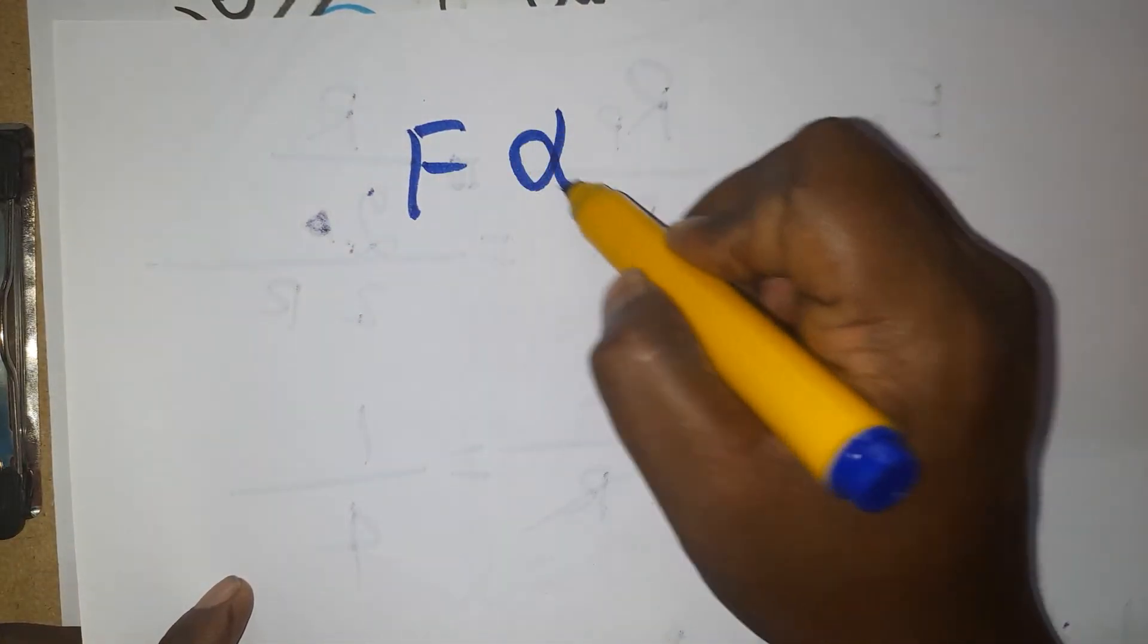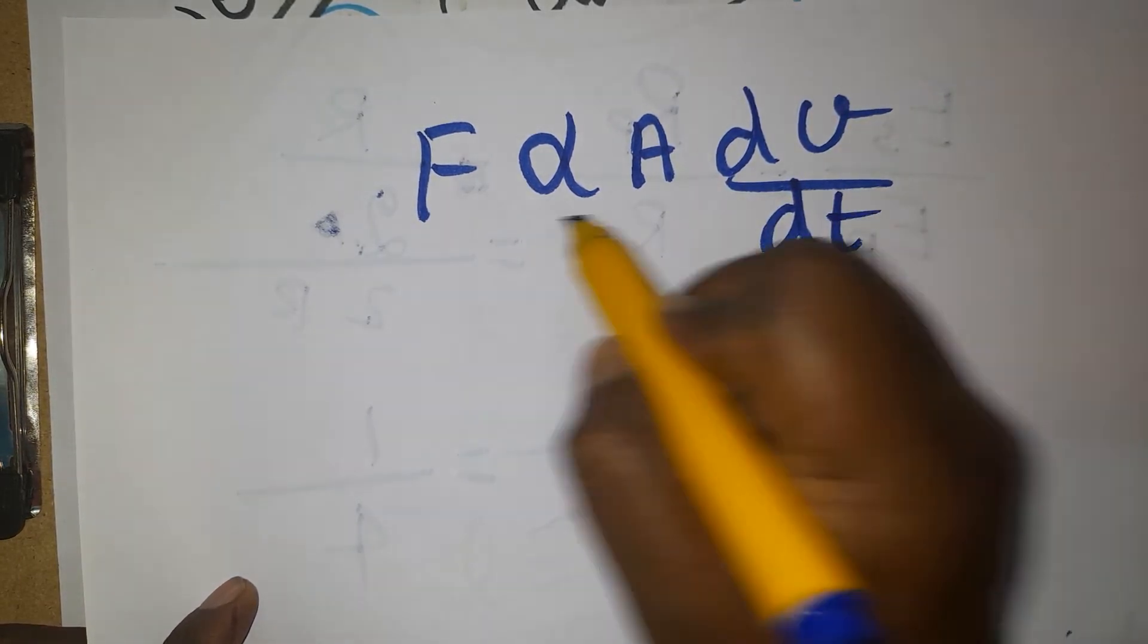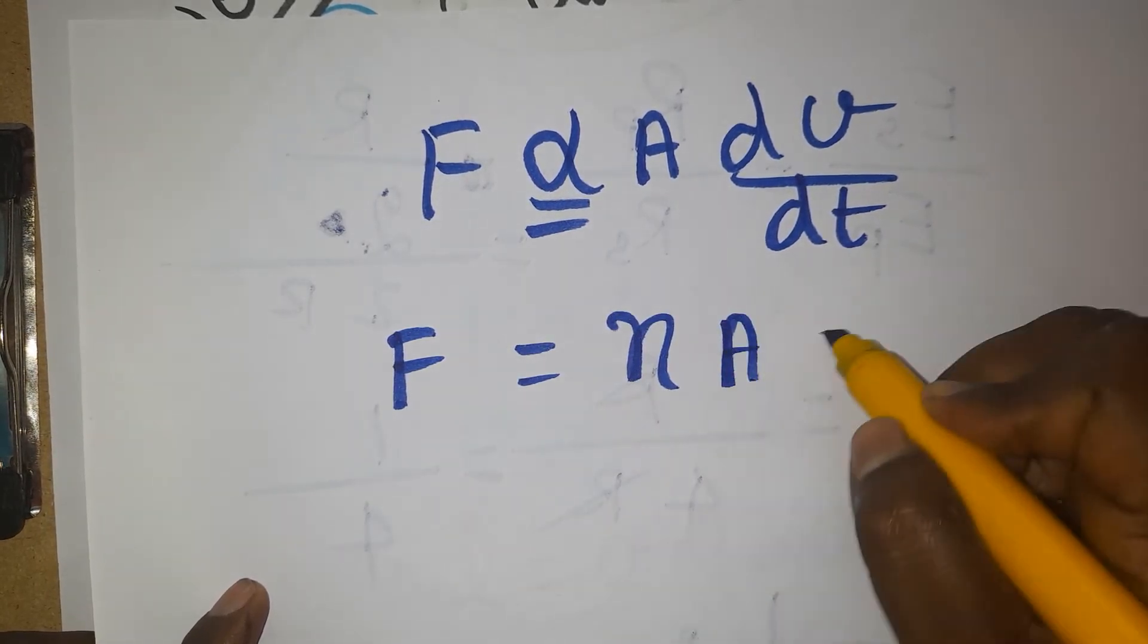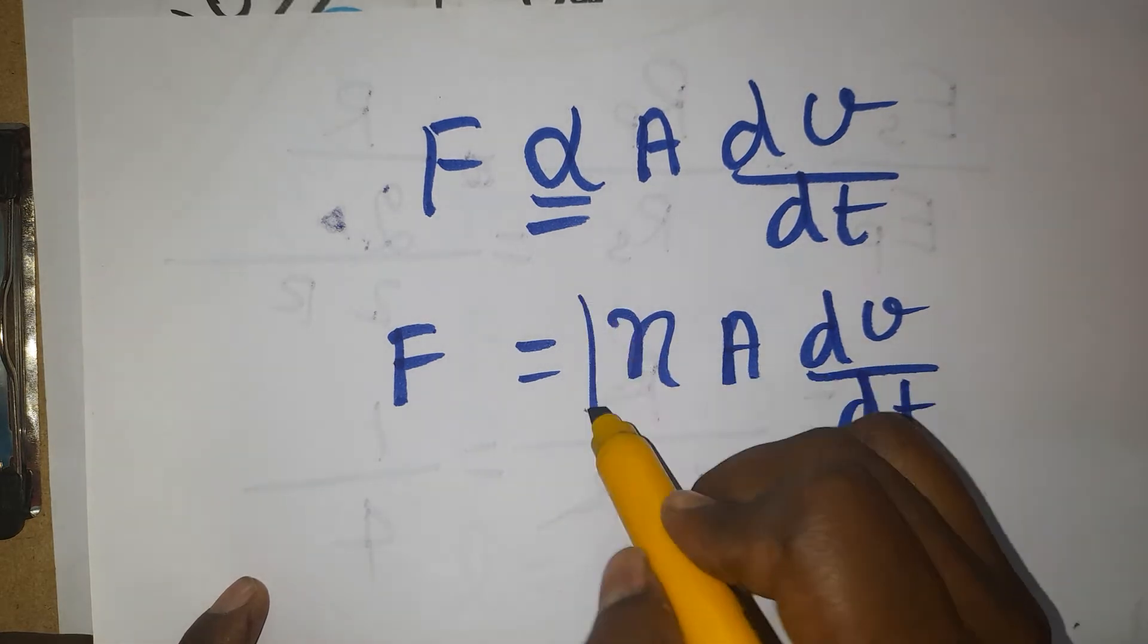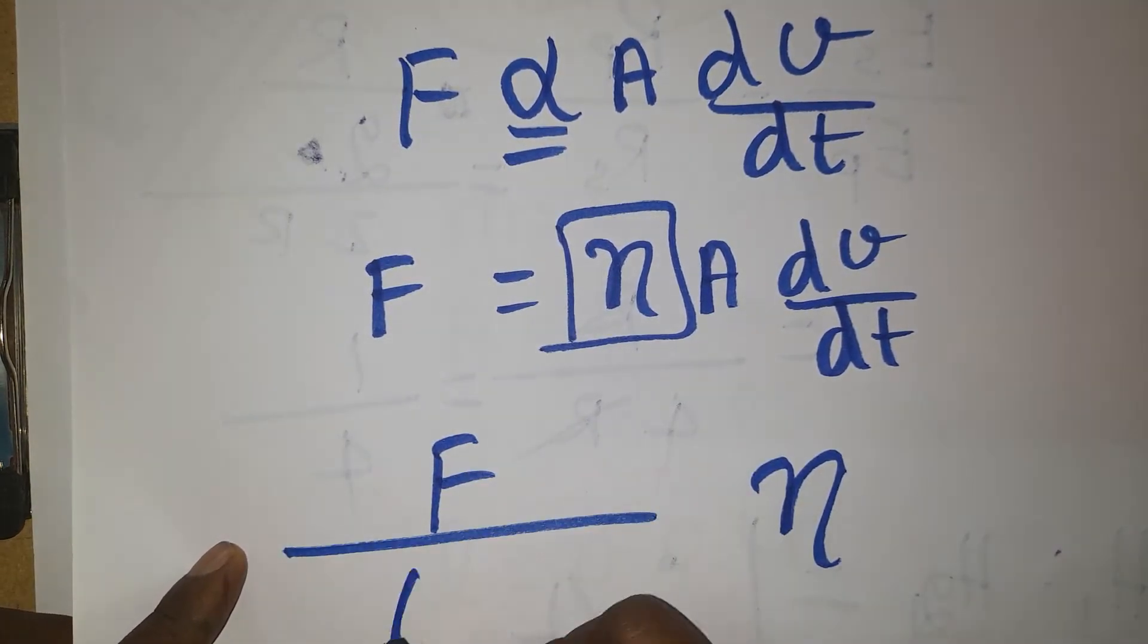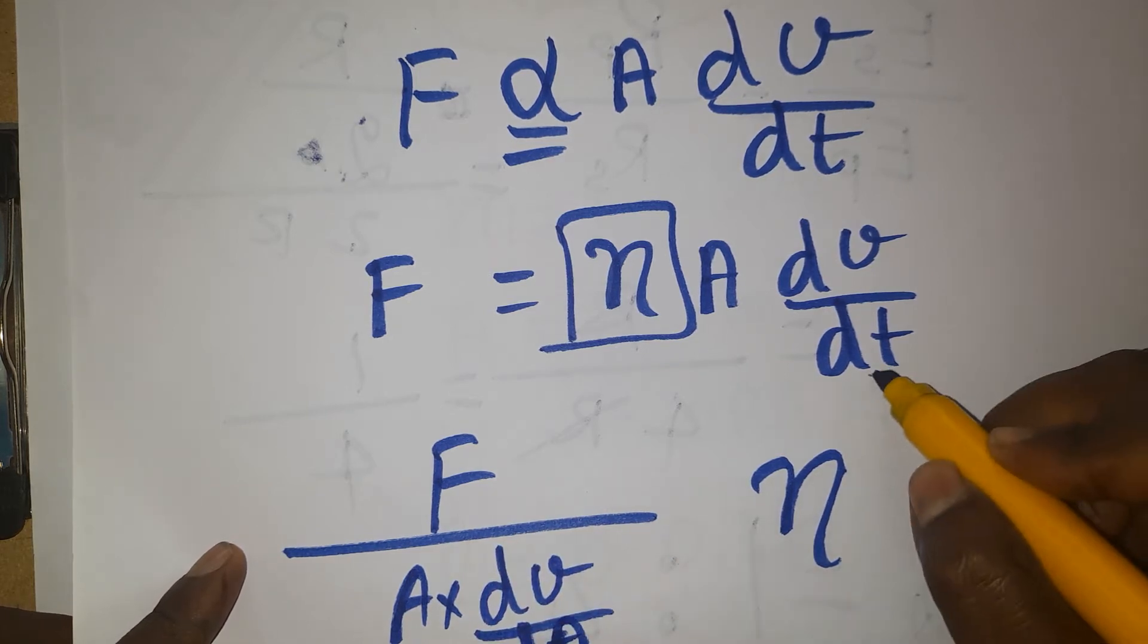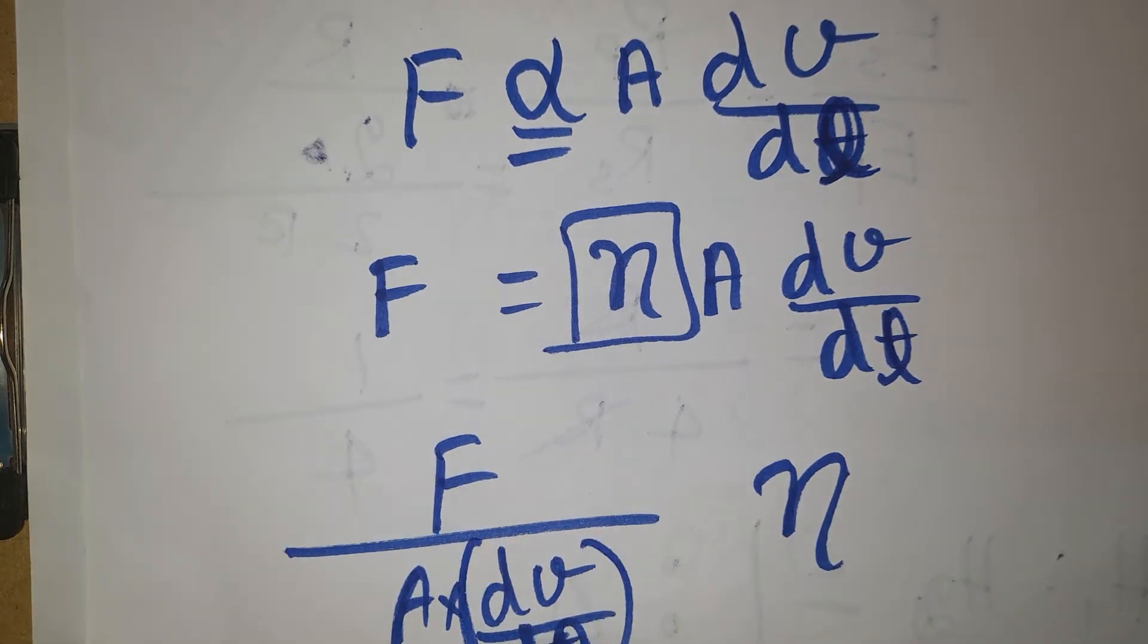Viscous force is directly proportional to the area and velocity gradient. If you remove the proportionality, you will get the coefficient of viscosity: η = F/(A × dv/dx). Or you can directly write this formula. Coefficient of viscosity equals force divided by area into change in velocity by length, not time. This is velocity gradient, meaning changing velocity with respect to length.